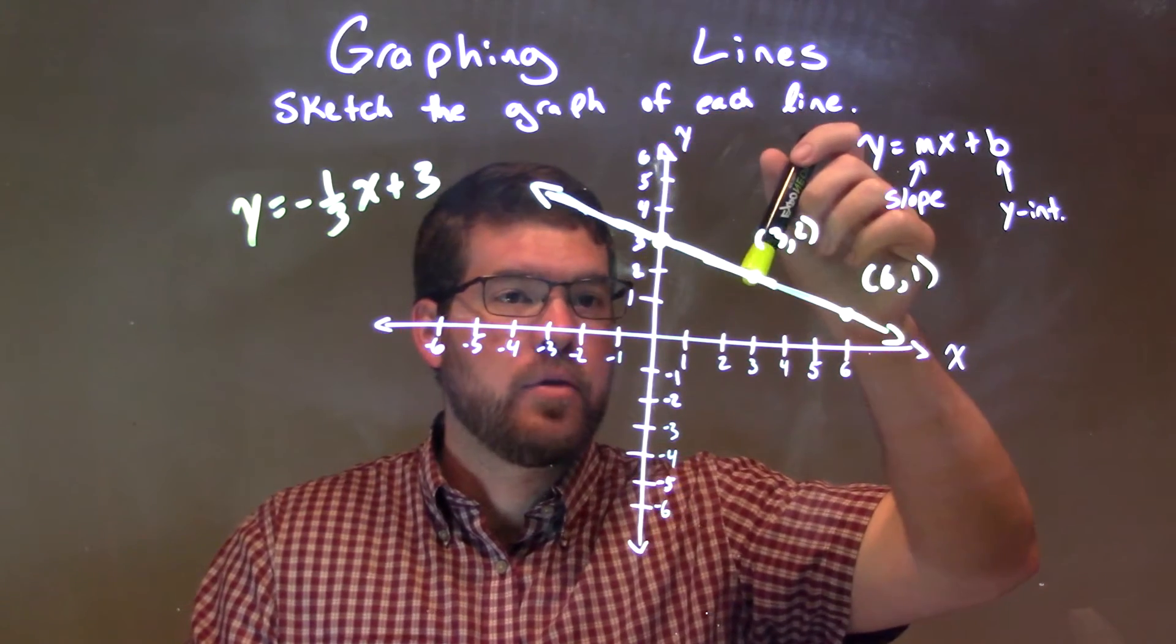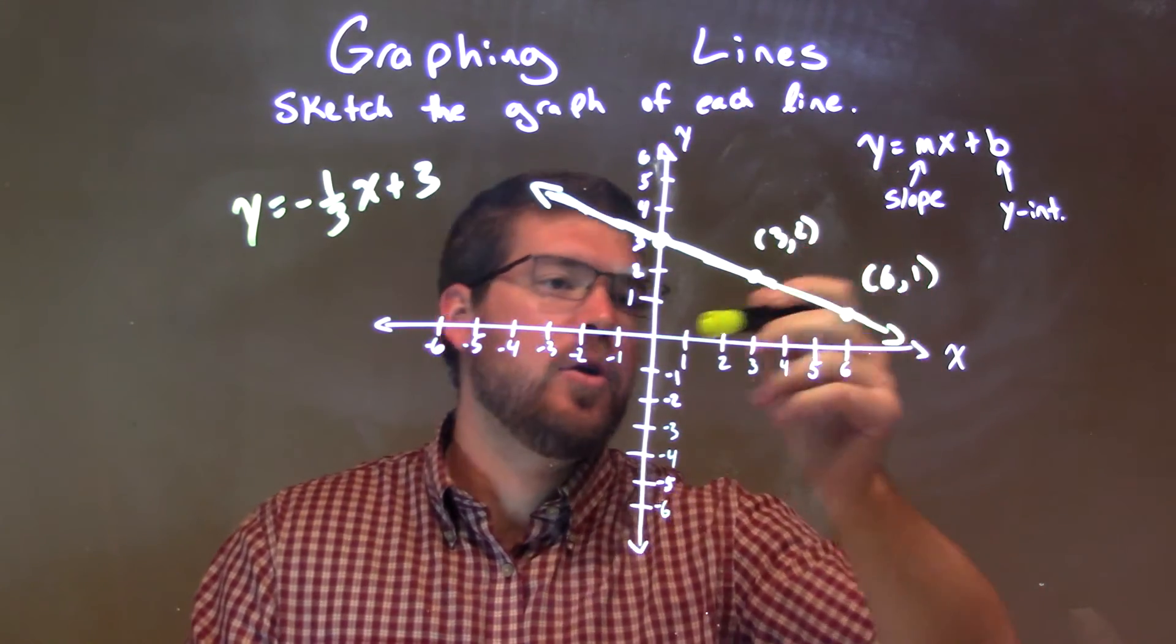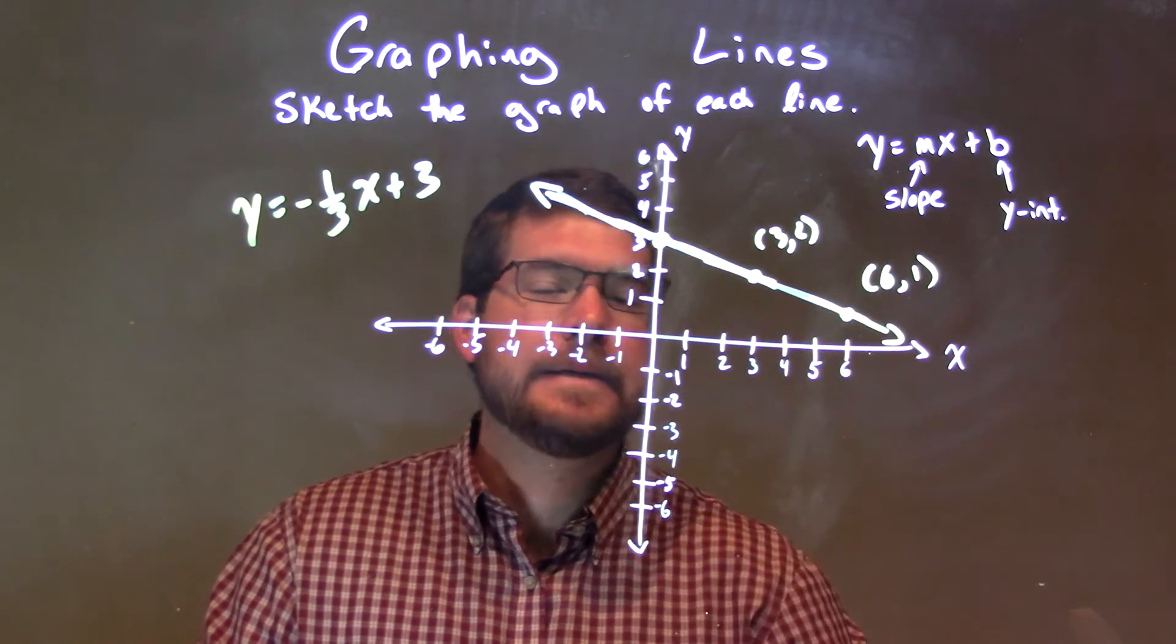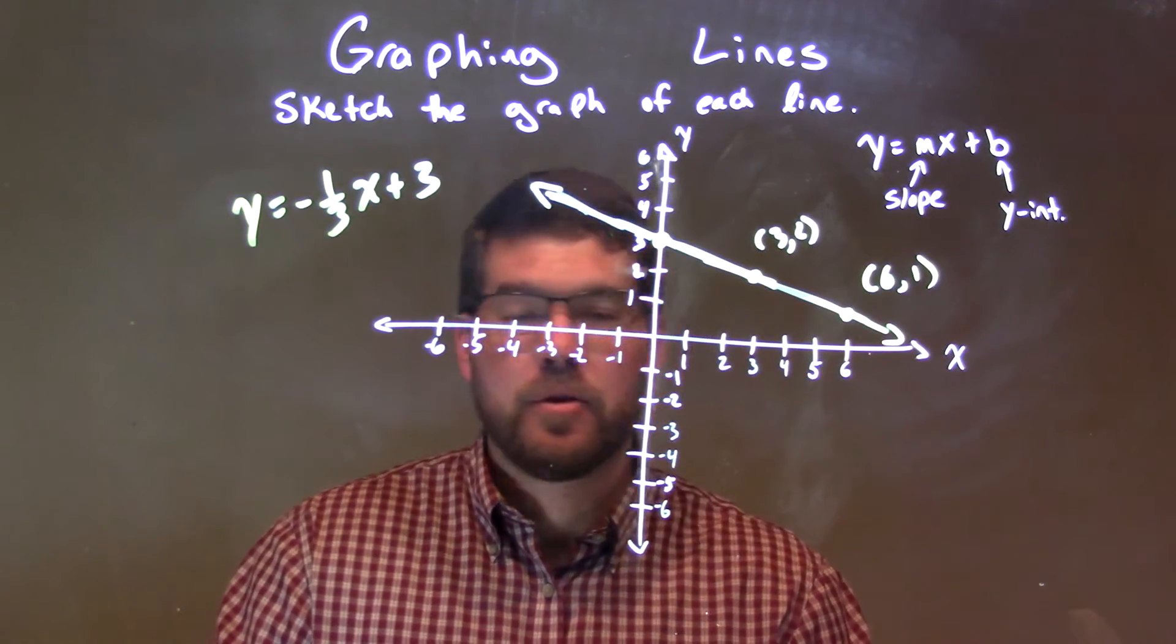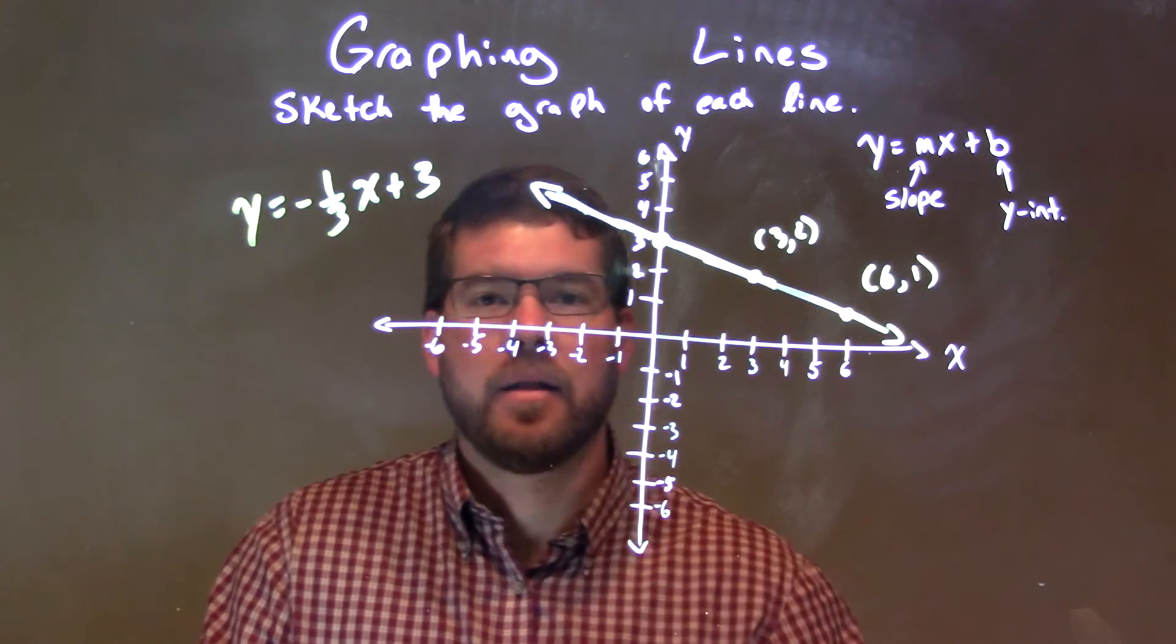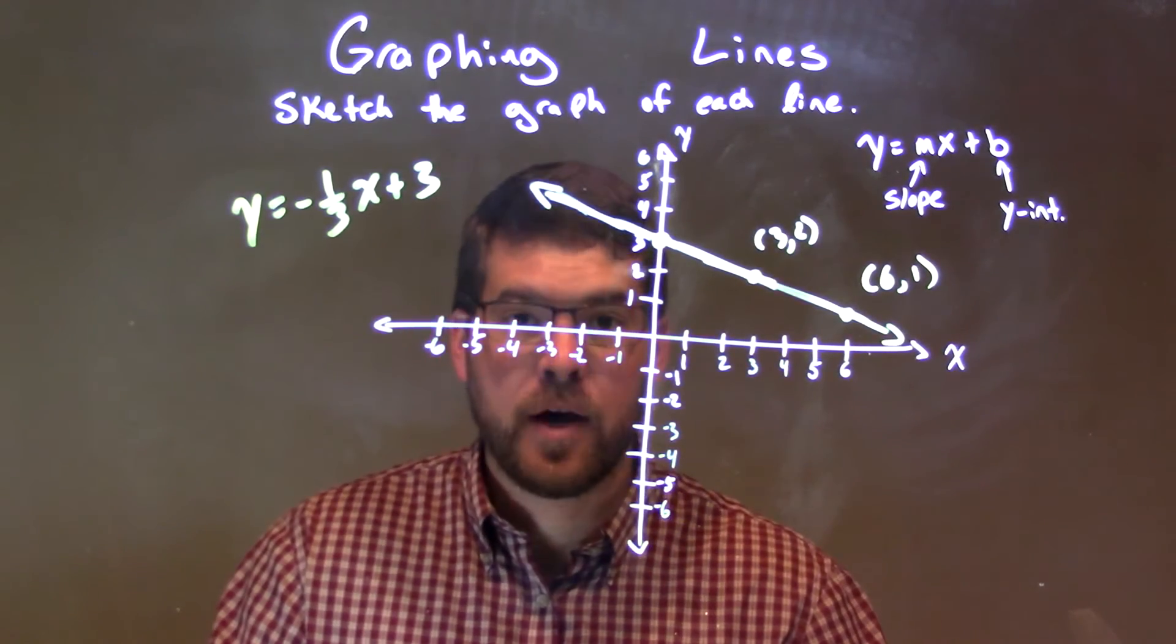So I went down one over three units. And I did it again. Down one over three. Got two extra points, total of three points. Connected them, made my line, and there we have our final answer.